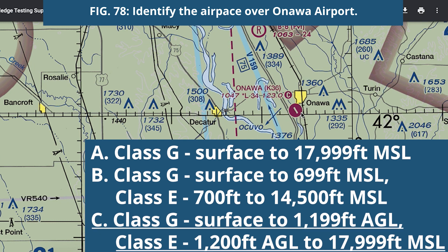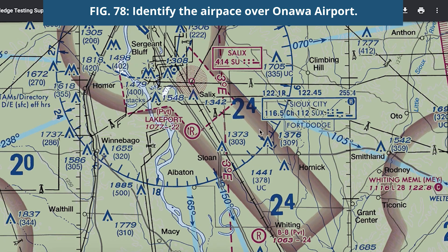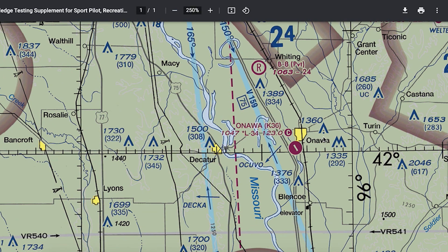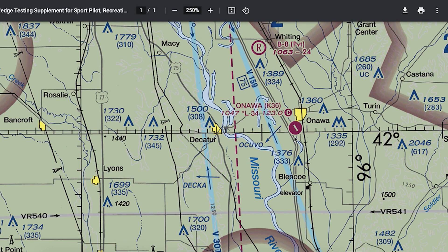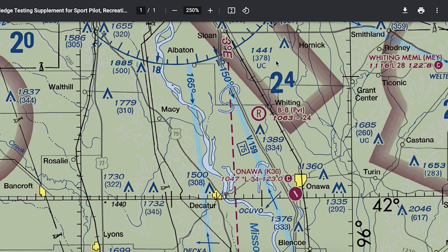Unless it's otherwise marked, class G turns into class E at 1200 feet AGL. There's no class of airspace being indicated around this airport, so the correct answer is class G. All three answer choices have class G, making this a definition-style question. Class G starts at the surface and goes up to 1200 feet, then it's class E from 1200 feet up to but not including 18,000 feet MSL. In thick magenta fuzzy areas — class E transition zones — if Onawa were located there, class G would only go up to 700 feet AGL. There's a difference between flying here versus there when it comes to where class G stops and class E starts.